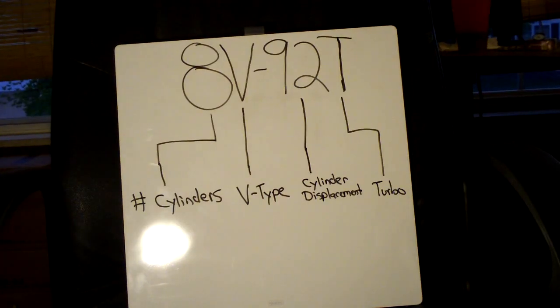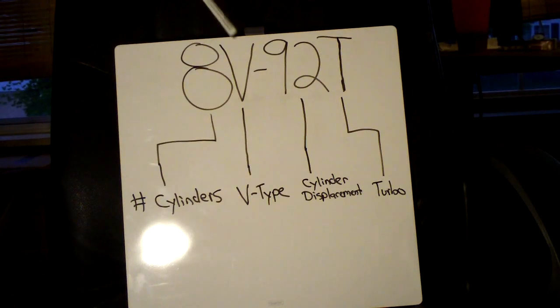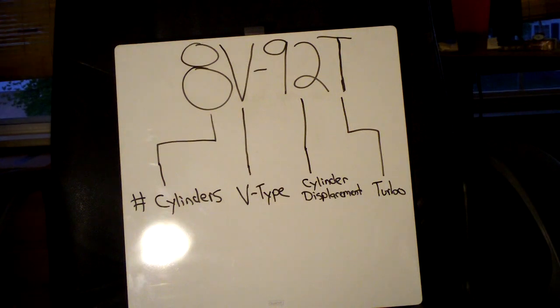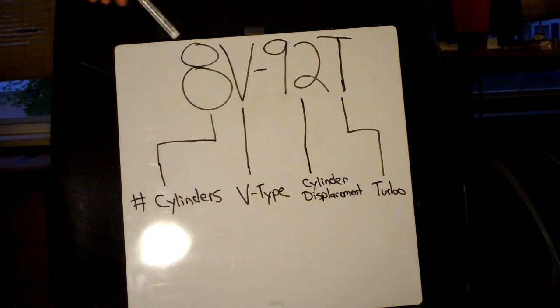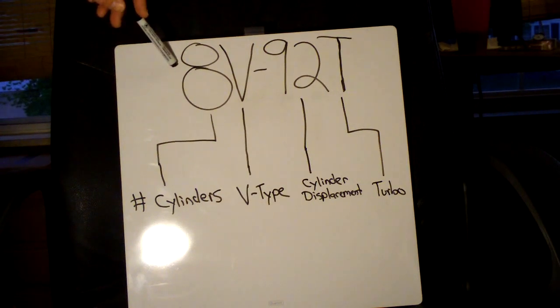Okay, moving on. The next engine we're going to look at, and I'm using for an example, is the 8V92T. Now as with the 671, the first number is going to indicate the number of cylinders. This is the same on all of them.